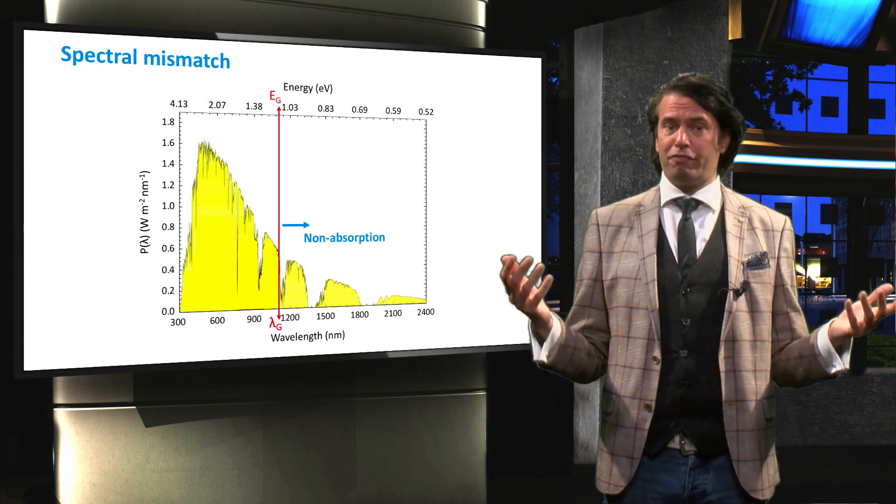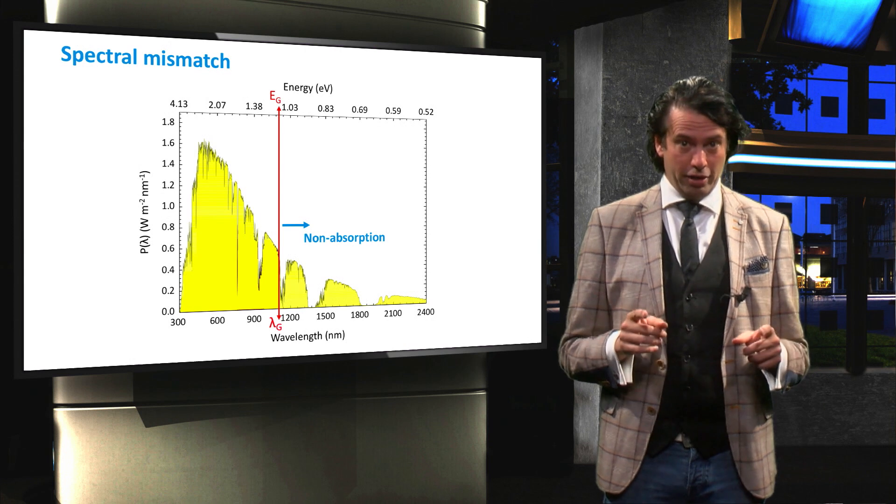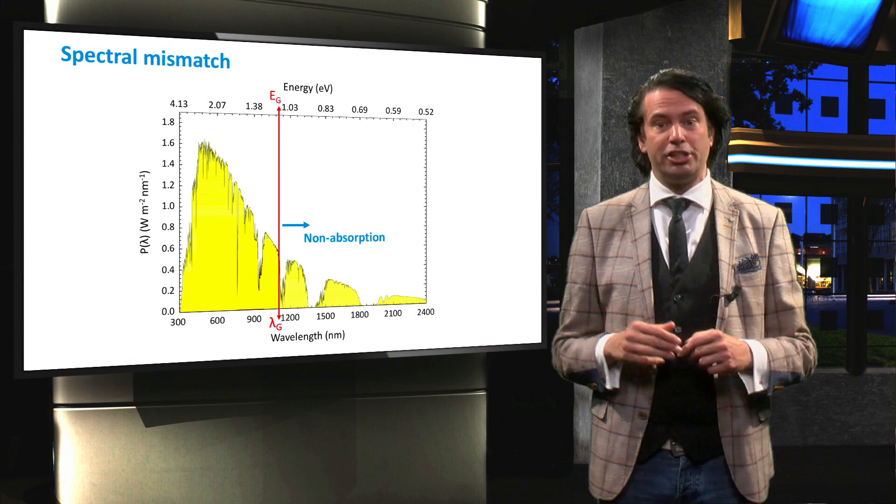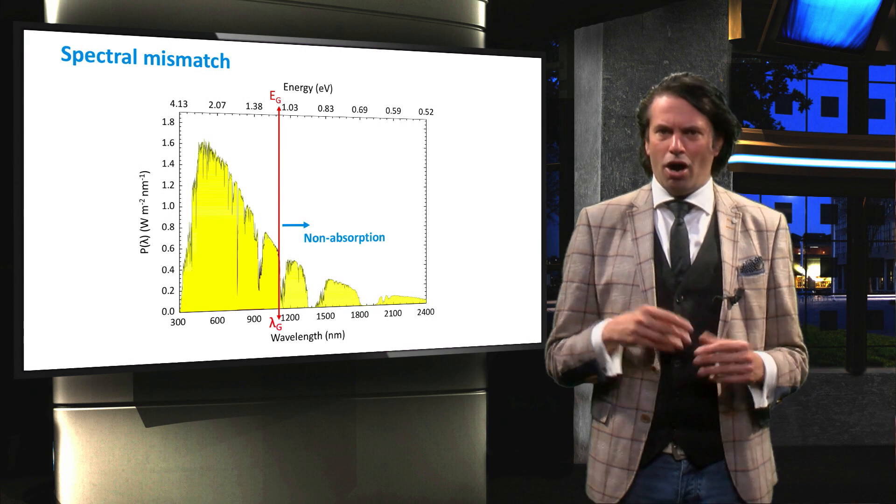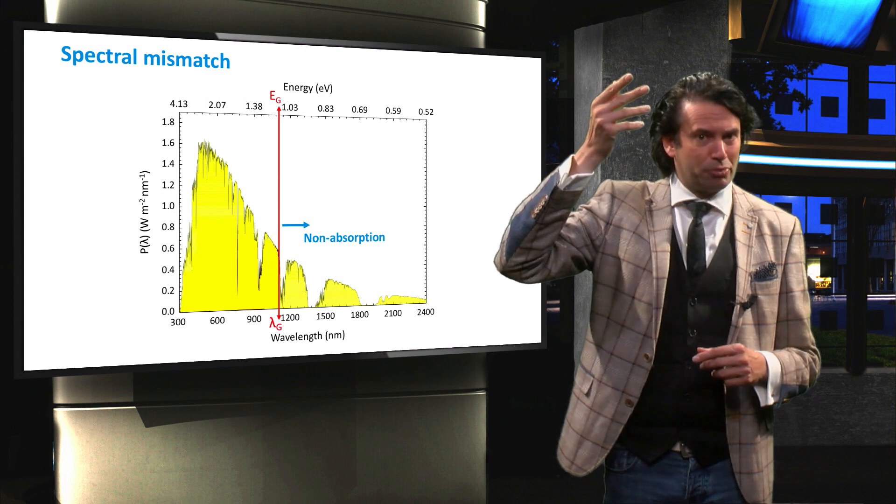Below bandgap photons are therefore lost due to non-absorption. If, on the other hand, the photon has an energy greater than the bandgap energy, some of its energy is lost as well. Upon absorption of a photon, the valence electron will be excited high into the conduction band.